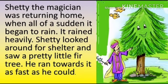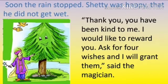This chapter is about a little fir tree who protects a magician from getting wet in the rain and as the magician became happy, it rewarded the tree with four wishes.